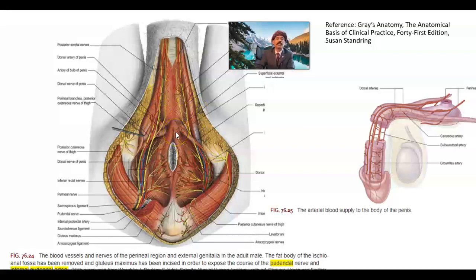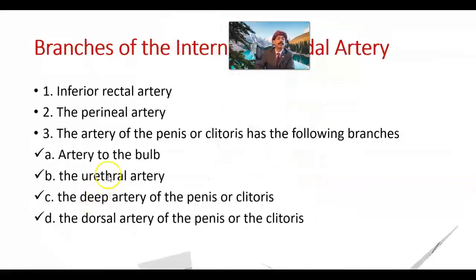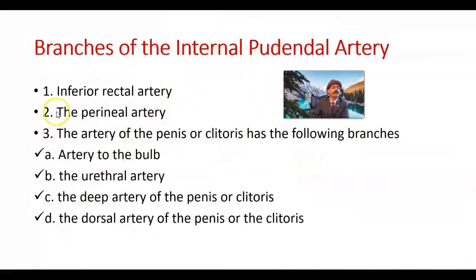The branches of the internal pudendal artery are as follows. The inferior rectal artery supplies the lower part of the rectum as well as the anal canal, and is important specifically for the blood supply of the anal canal.